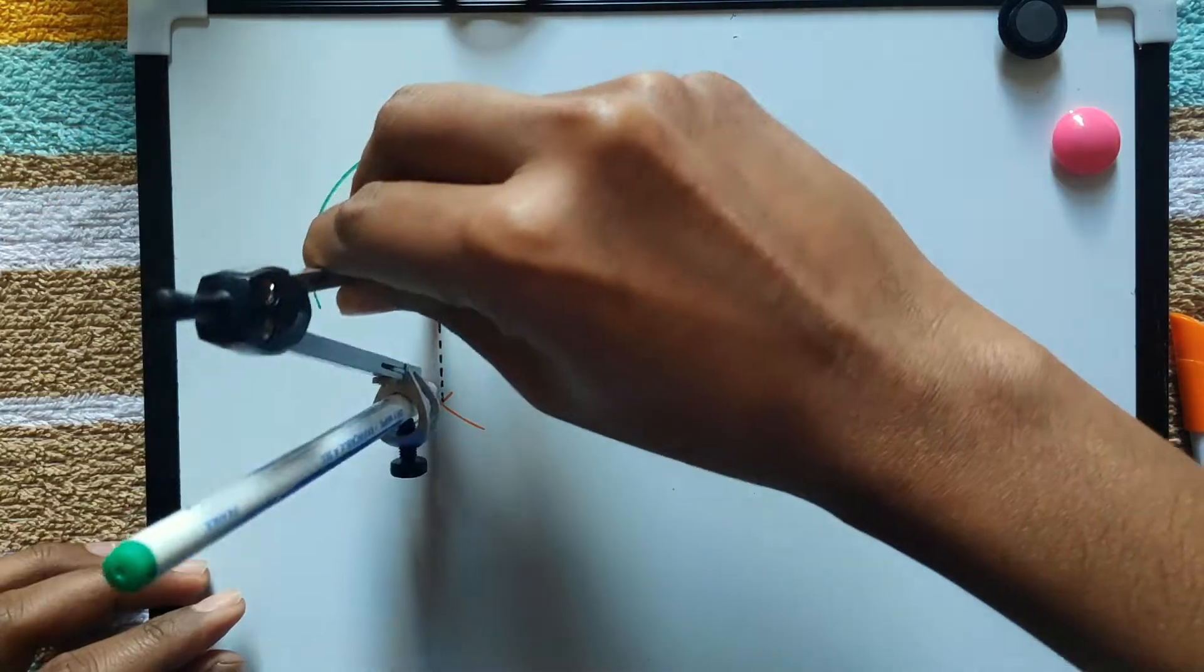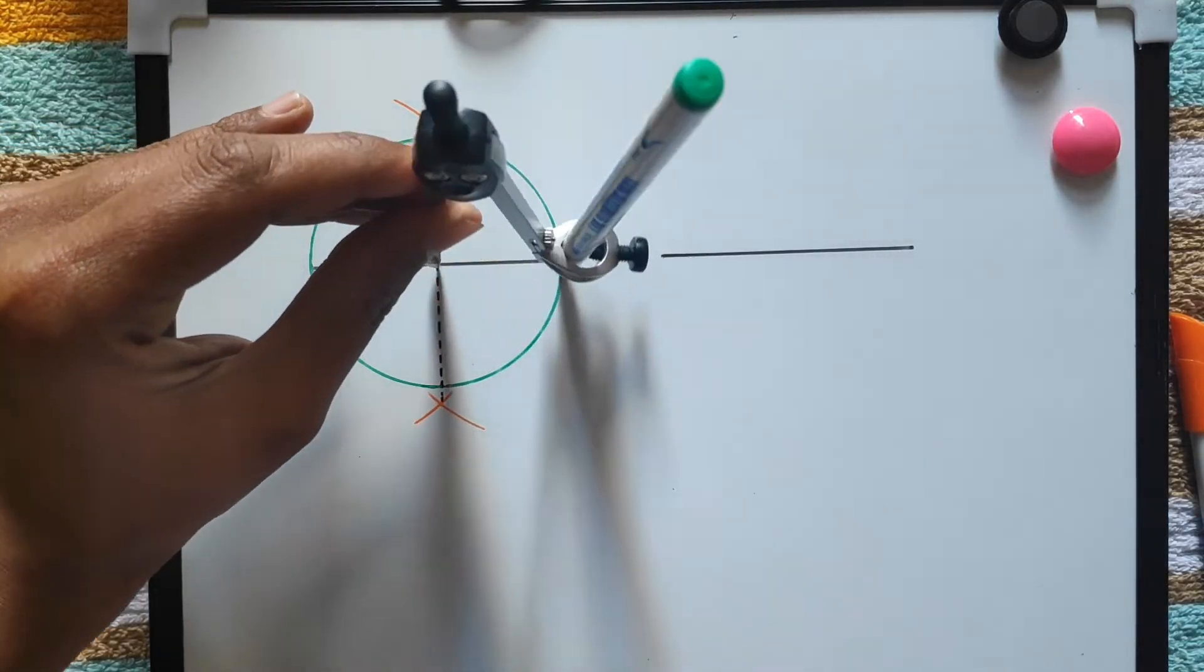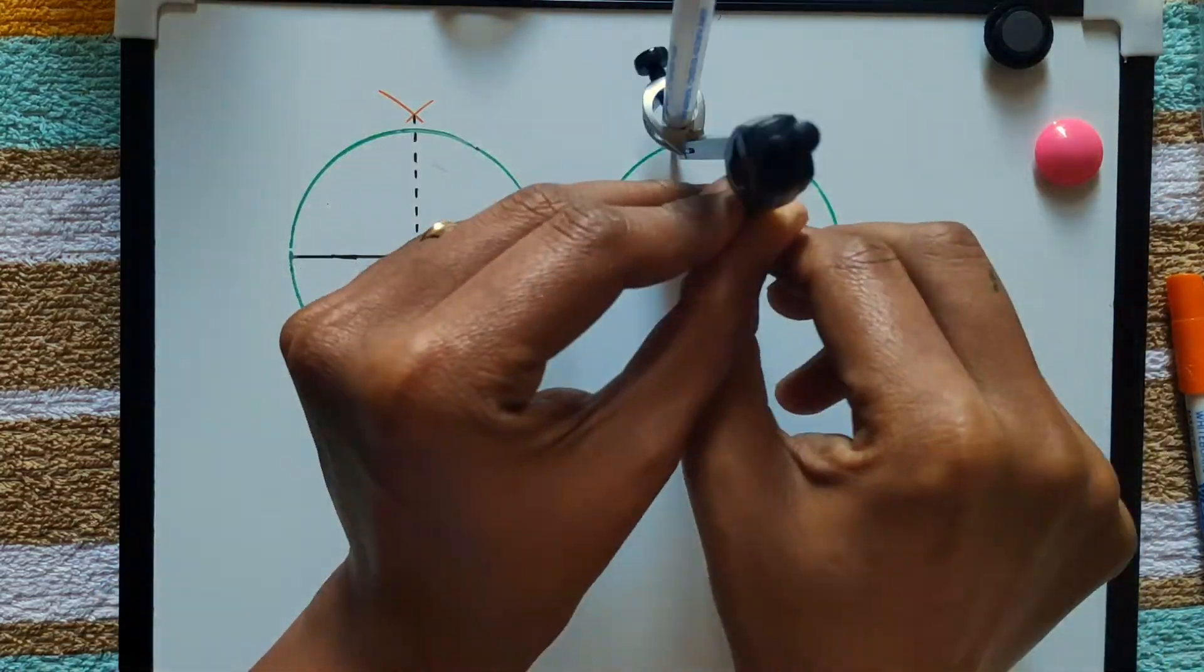Now the radius we found, so by using that we are drawing the circle. Draw all 4 different circles.